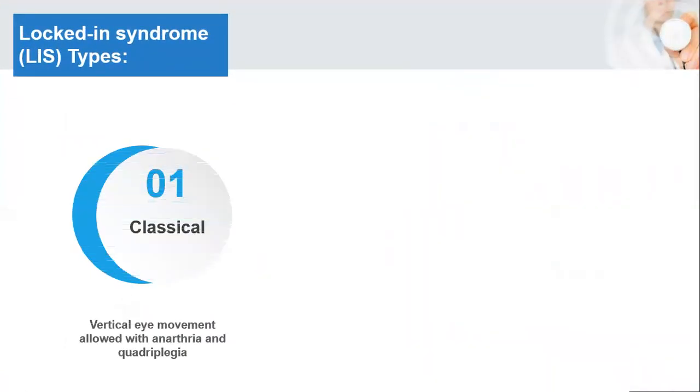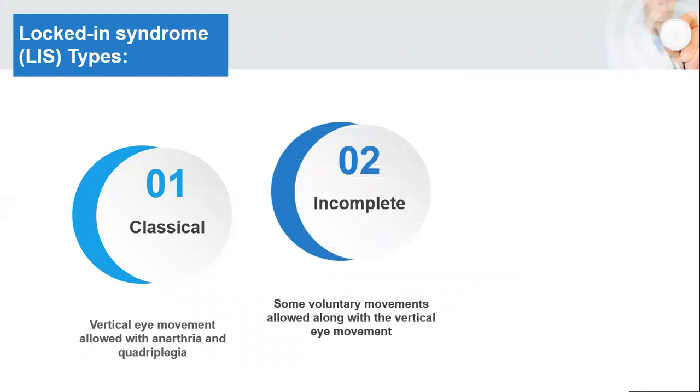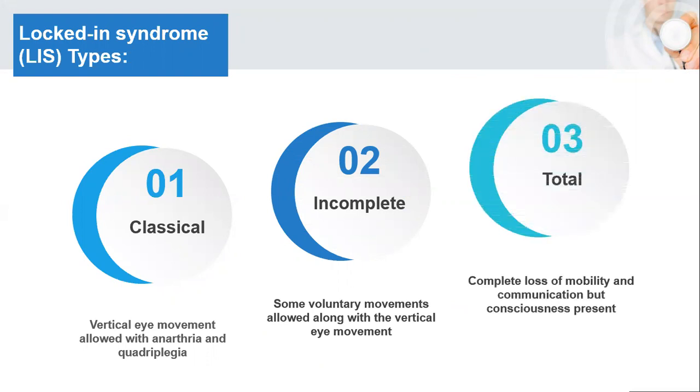There are three types of locked-in syndrome. In classical locked-in syndrome, vertical eye movement is allowed with anarthria and quadriplegia, but horizontal eye movement isn't involved. In incomplete locked-in syndrome, some voluntary movements are allowed along with vertical eye movement. And in total or complete locked-in syndrome, there is complete loss of mobility and communication, but consciousness is present. Mind is aware of the environment but cannot move.